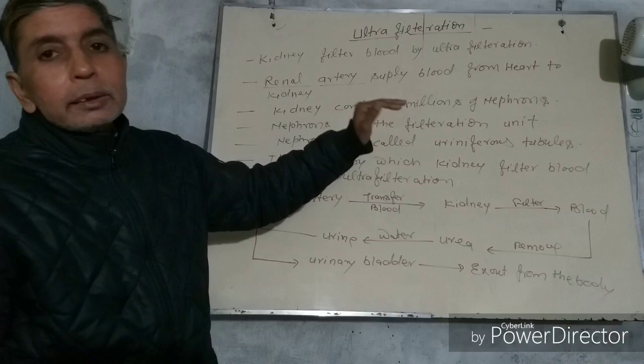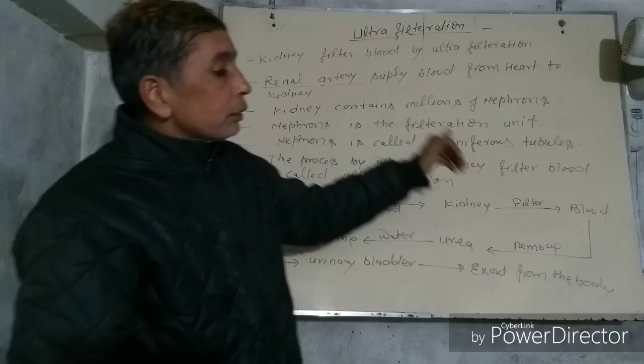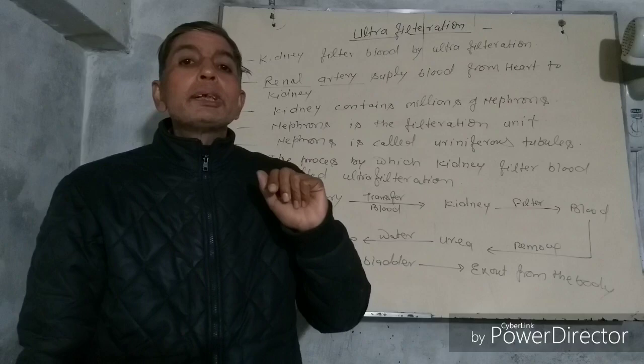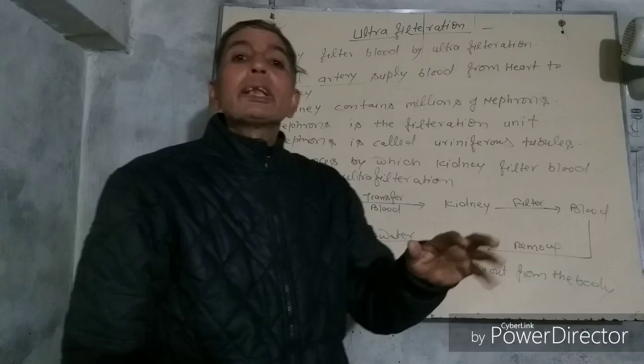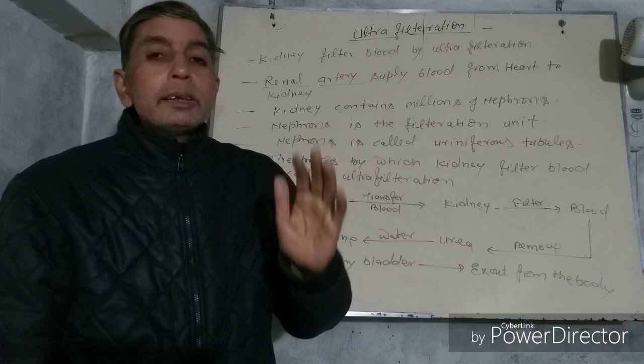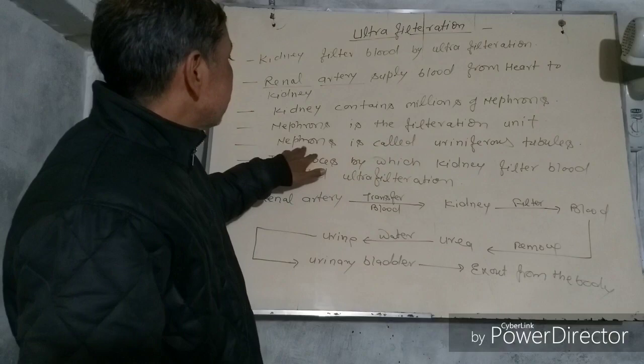The kidney — there are two kidneys present in our abdominal cavity. Each kidney contains millions of nephrons. Nephrons are also called urinary tubules. These nephrons are the filtration unit present within the kidney.